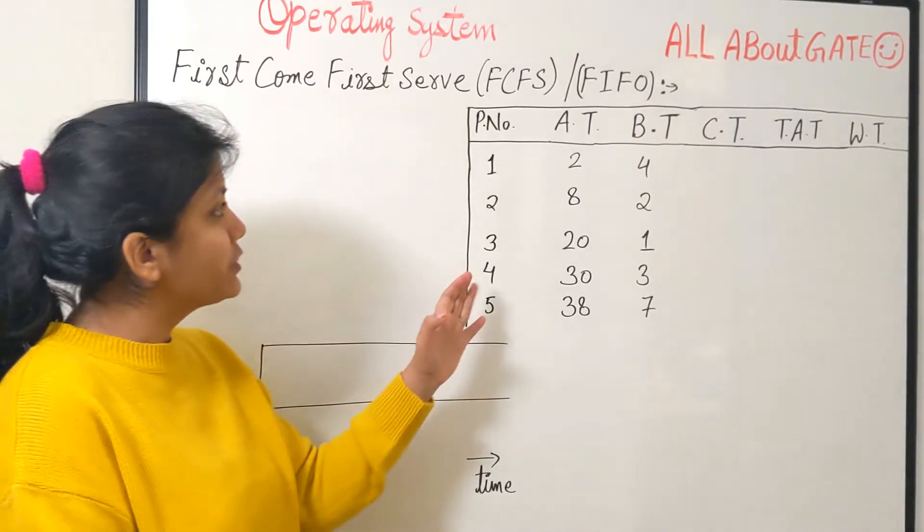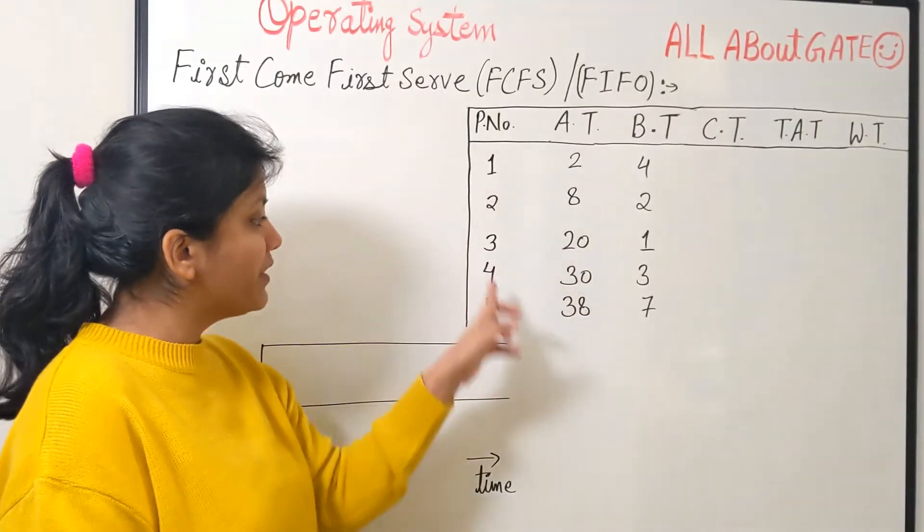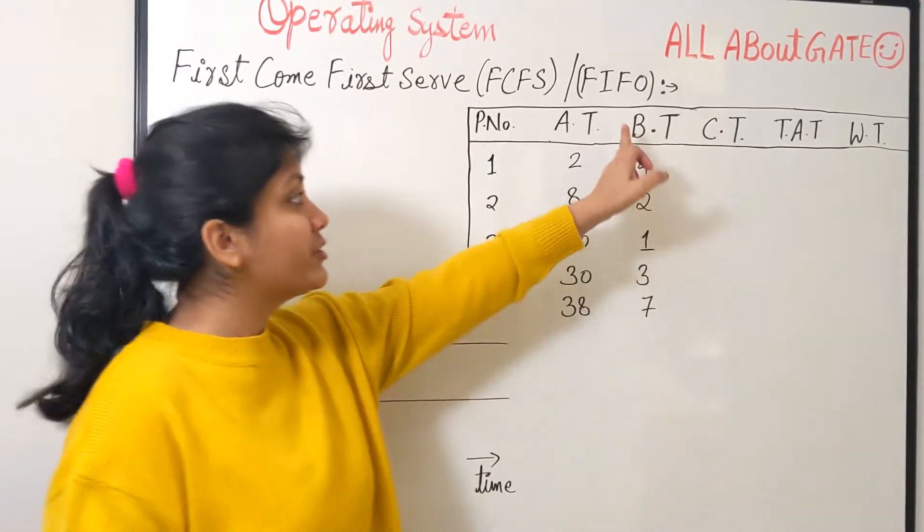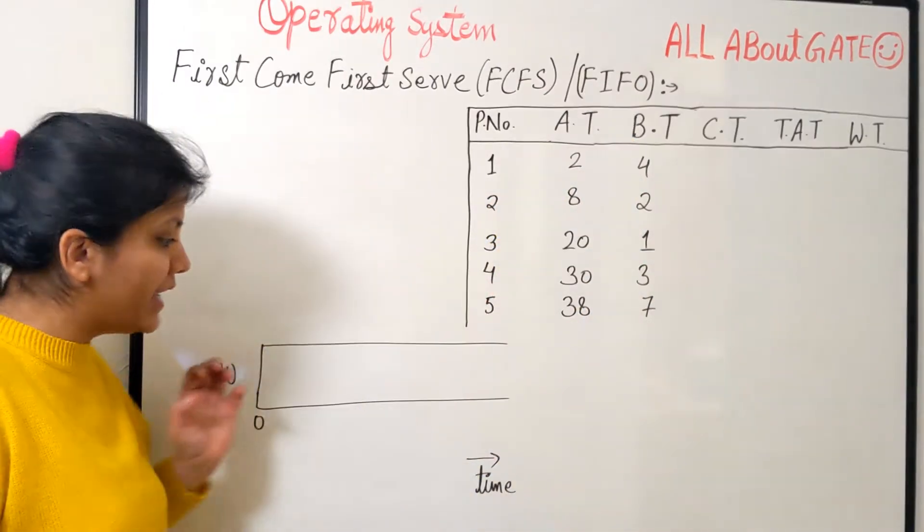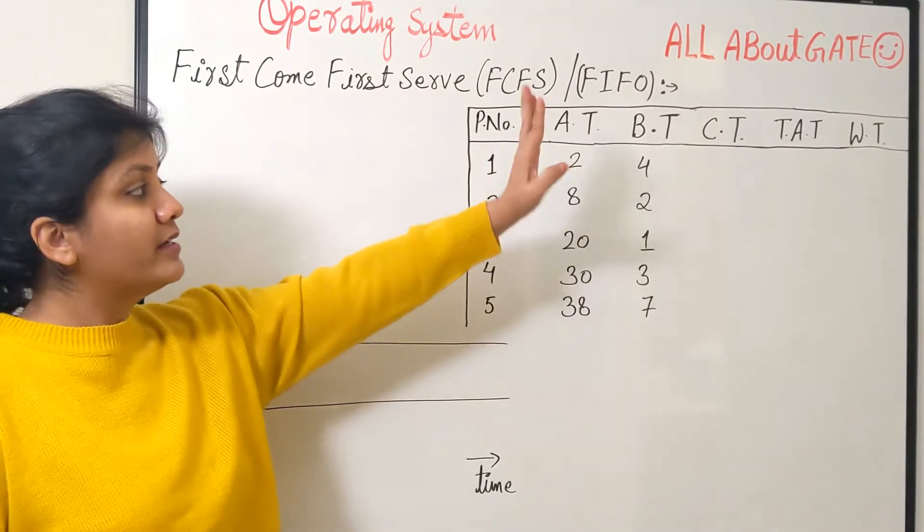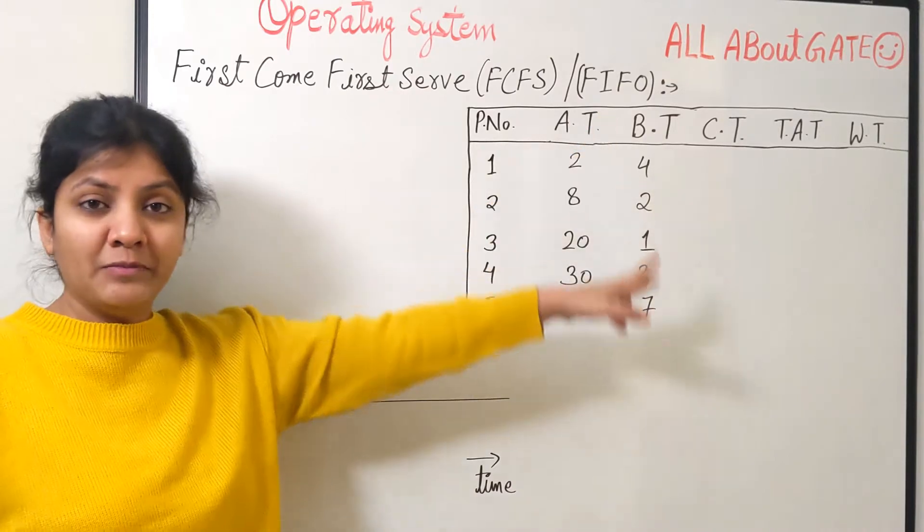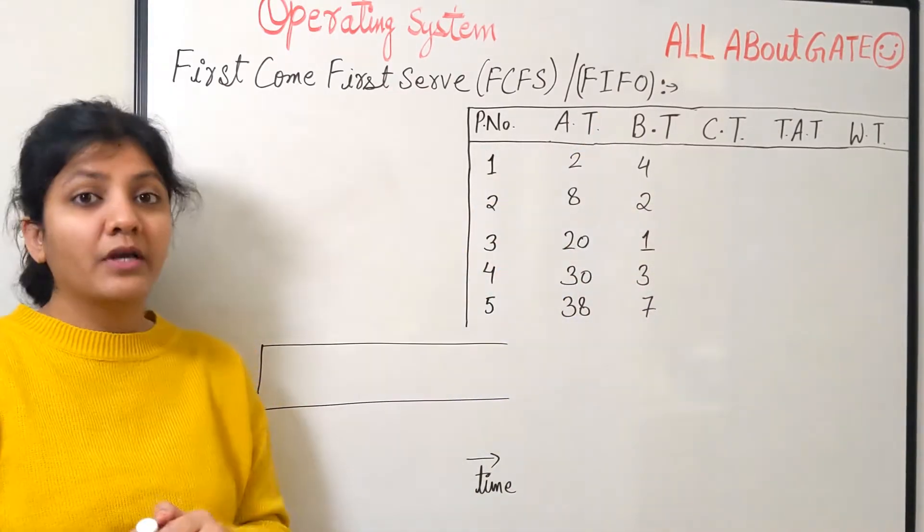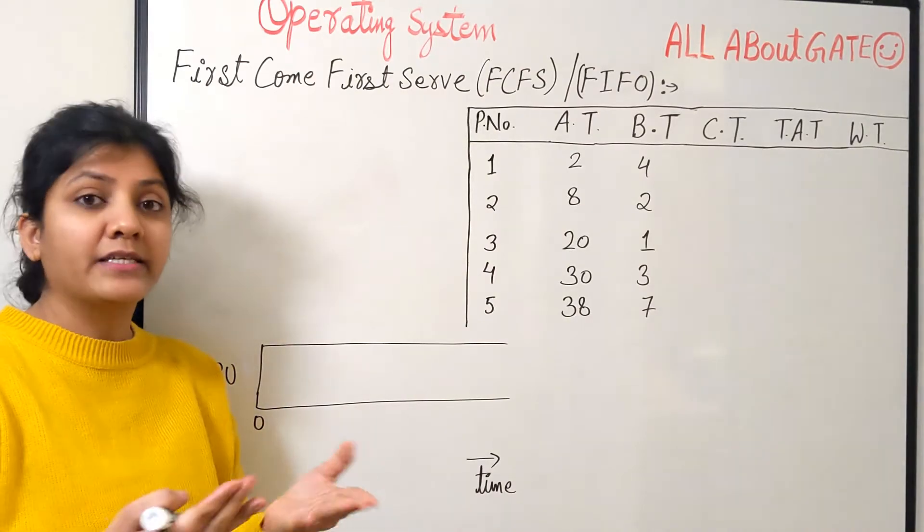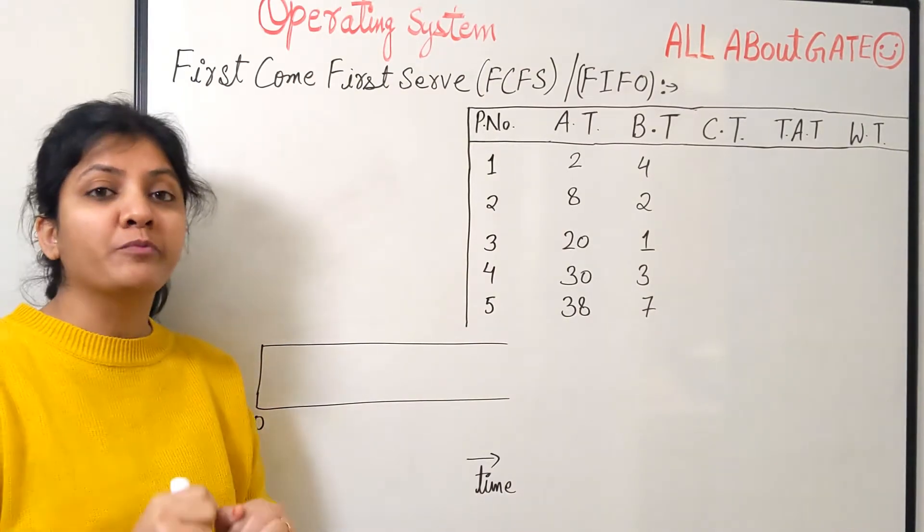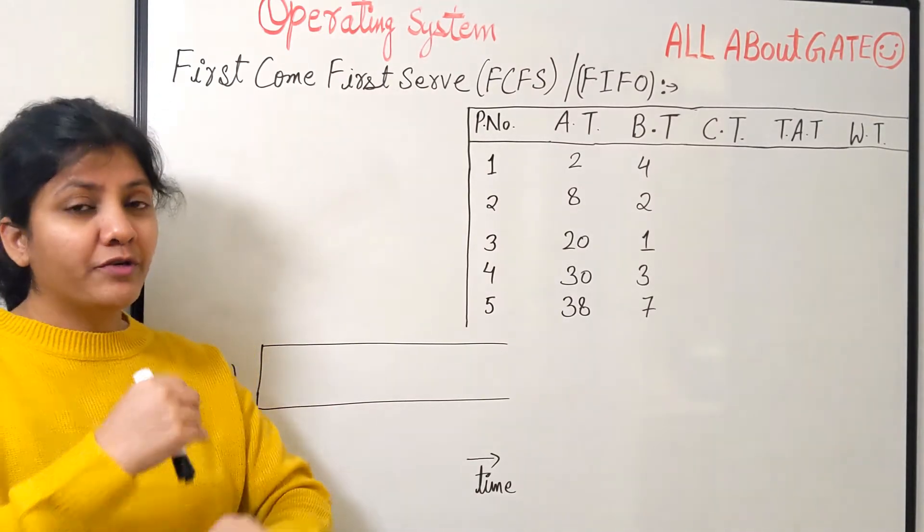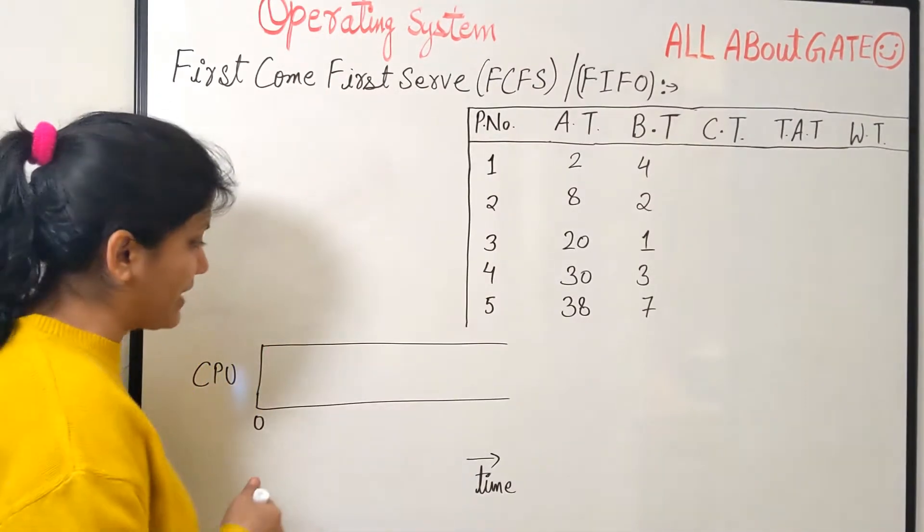The question is right here in front of you. We have process number from P1 to P5 and their respective arrival times are given, their respective burst times are given. We simply have to schedule over the CPU on this Gantt chart and find out the respective values of completion time, turnaround time, and the waiting time. We know that first come first serve works on the arrival time, the criteria is arrival time and it is a non-preemptive scheduling algorithm.